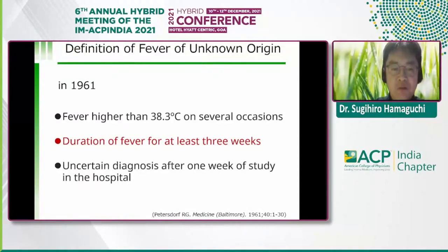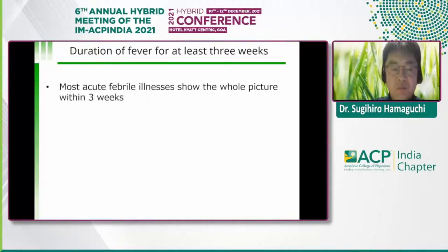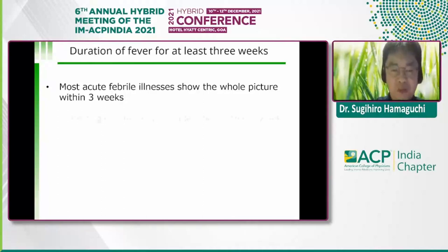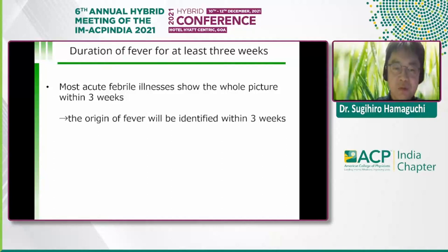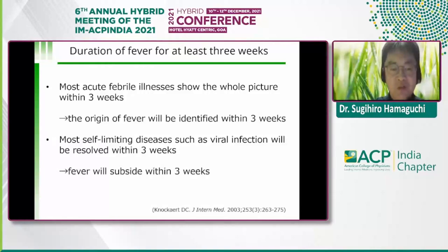The second criterion — duration of fever for at least three weeks — is because most acute febrile illnesses show their full clinical picture within three weeks, meaning the original fever will be identified and it won't become FUO. Also, most self-limiting diseases such as viral infections will resolve within three weeks, so the fever will subside.